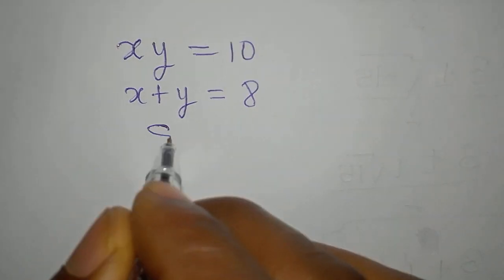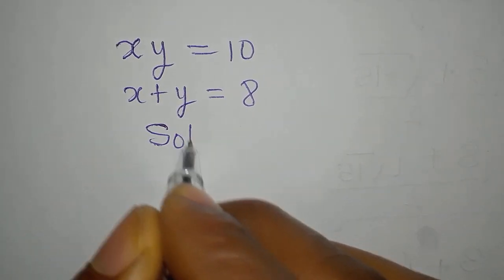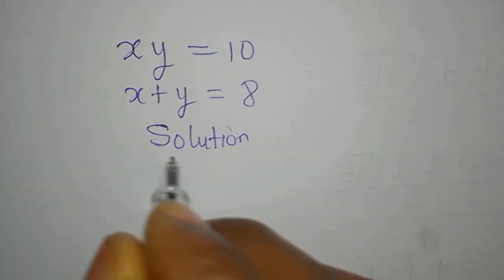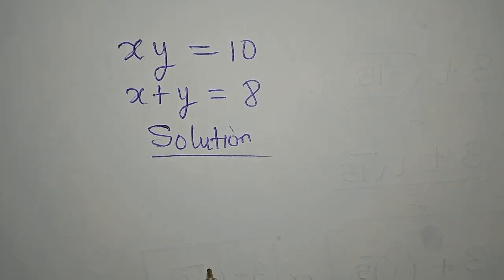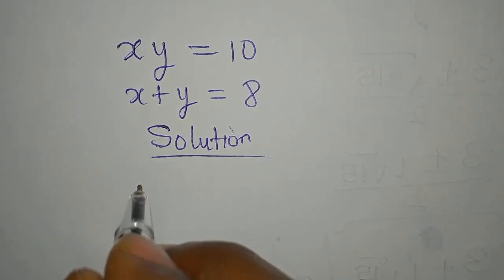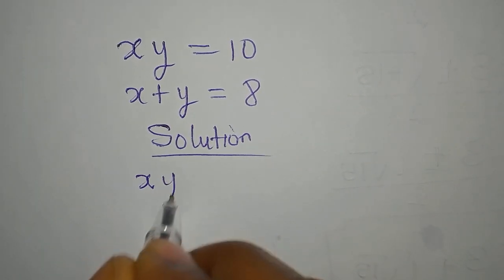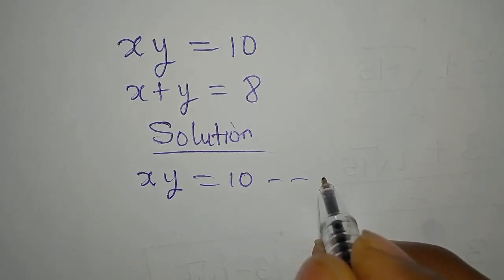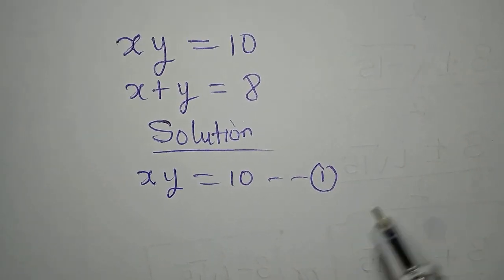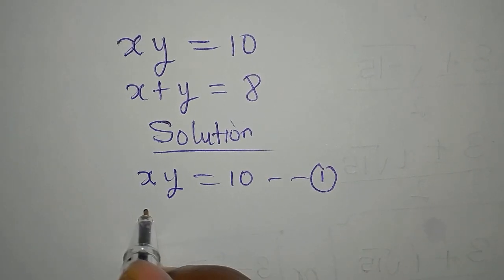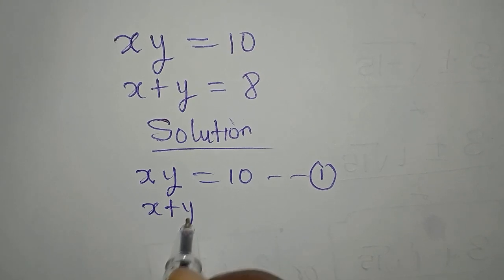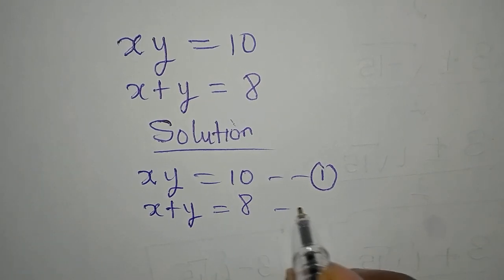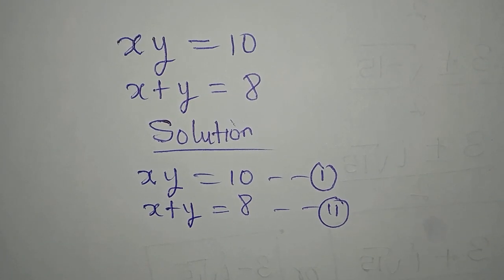Hello everyone. Let's provide the solution to this problem simultaneously. x times y equals 10 — this is our equation 1. Now x plus y equals 8 — this becomes our equation 2.